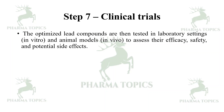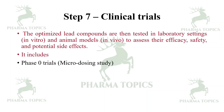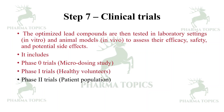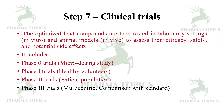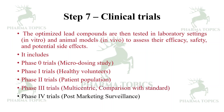The next step is clinical trials. The optimized lead compounds are tested in laboratory settings — in vitro or in vivo models — to assess their efficacy and safety for potential adverse effects. Clinical trials include Phase 0, which is a microdosing study; Phase 1, conducted in healthy volunteers; Phase 2, which is the first patient population study; and Phase 3, a multicentric trial that typically compares with the standard treatment.